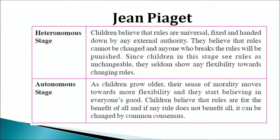Piaget described children's moral development through two stages, namely heteronomous and autonomous morality. In the heteronomous stage, children believe that whatever rules exist are universal and cannot be changed, and that some external authority has made those rules. They believe rules cannot be changed and anyone who breaks the rules will be punished. Since children in this stage see rules as unchangeable, they seldom show any flexibility and have a tendency to stick strictly to the rules.